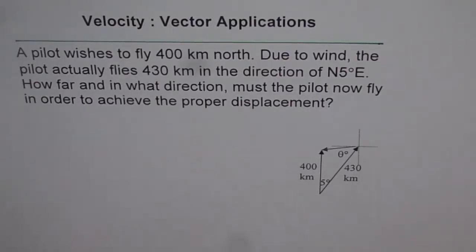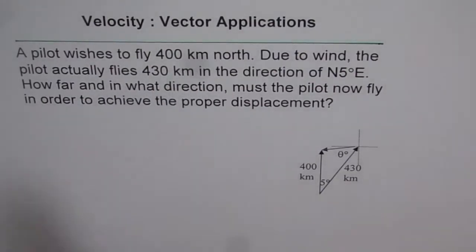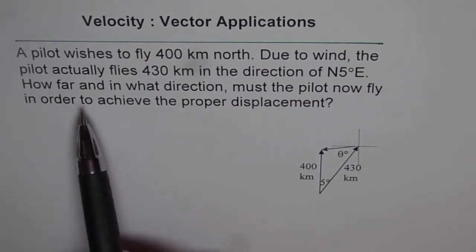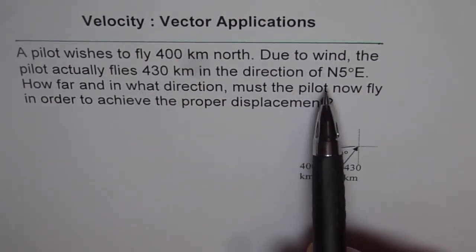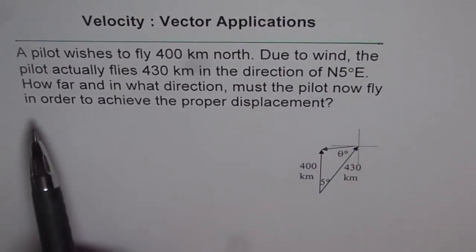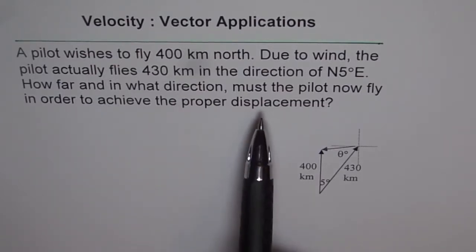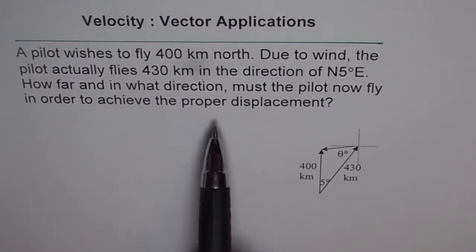Here is another application of vectors. A pilot wishes to fly 400 km north. Due to wind, the pilot actually flies 430 km in the direction of 5 degrees east of north. How far and in what direction must the pilot now fly in order to achieve the proper displacement?